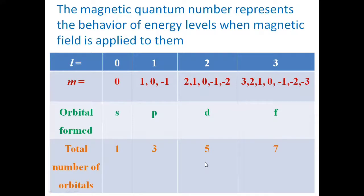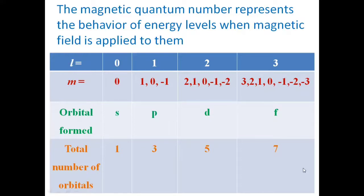If L is equal to 3, the azimuthal quantum number value is 3, then M has values 3, 2, 1, 0, minus 1, minus 2, and minus 3 — a total of 7 values. The orbital form is the F-orbital and the total number of orbitals is 7.